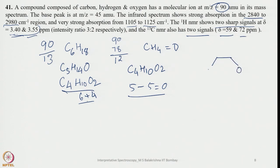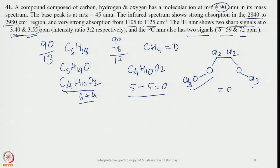Both signals are much more deshielded than expected for a simple CH3 next to carbon, which would come around 1–2 ppm. Since they are more deshielded, they are probably next to an electronegative atom — here, oxygen. So we can place CH2–CH2 in the middle with two OCH3 groups attached. These CH2 and CH3 groups will each show a singlet, with a ratio consistent with the 3.40 and 3.55 signals. This structure corresponds to 1,2-dimethoxyethane.